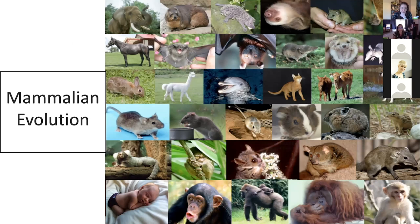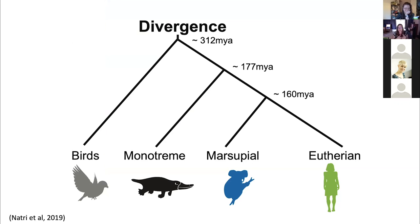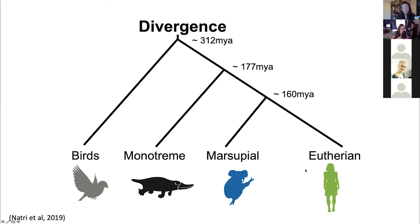Let's talk about mammalian evolution. All monotremes, marsupials, and eutherians diverged from birds about 300 to 320 million years ago. Monotremes — mammals that still produce milk and have hair but lay eggs — diverged from the rest about 177 to 200 million years ago. Marsupials, largely found in Australia though we do have North American marsupials, and eutherians — which include humans, dogs, cats, whales, dolphins, cows, pigs, and mice — diverged from marsupials about 160 million years ago.